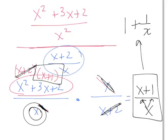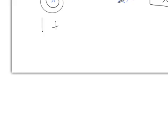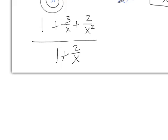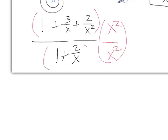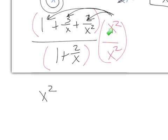Now let's solve Example 3 using Method 2. The original fraction is 1 plus 3 over x plus 2 over x squared, all over 1 plus 2 over x. The least common denominator of all the fractions is x squared. So we multiply by x squared over x squared, remembering to put parentheses around the expressions and distribute to each term. Distributing x squared to the 1 gives x squared. Distributing x squared to 3 over x cancels one x, leaving 3x. Distributing x squared to 2 over x squared cancels both, leaving just 2.